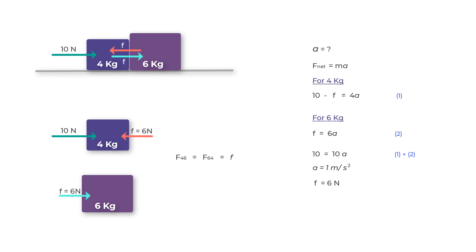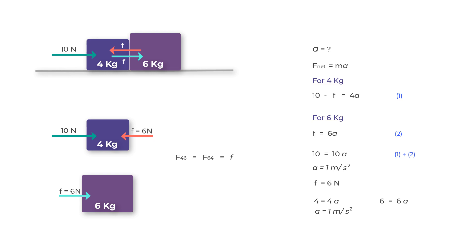Let's verify: on the 4 kilogram mass, a 10 N force acts rightward and a 6 N force (F) acts leftward, giving a net force of 4 N rightward. Dividing by 4 kg gives A = 1 m/s² — correct. For the 6 kilogram mass, the only force is 6 N, giving 6 = 6 × A, so A = 1 m/s² — also correct.